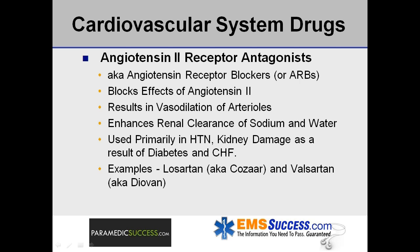Angiotensin-2 receptor antagonists, also known as angiotensin receptor blockers or ARBs, vasodilate arterioles by blocking the effects of angiotensin-2. This enhances the renal excretion of sodium and water. Their main use is in hypertension, kidney damage as a result of diabetes, and congestive heart failure. Examples include losartan, also known as Cozaar, and valsartan, also known as Diovan.